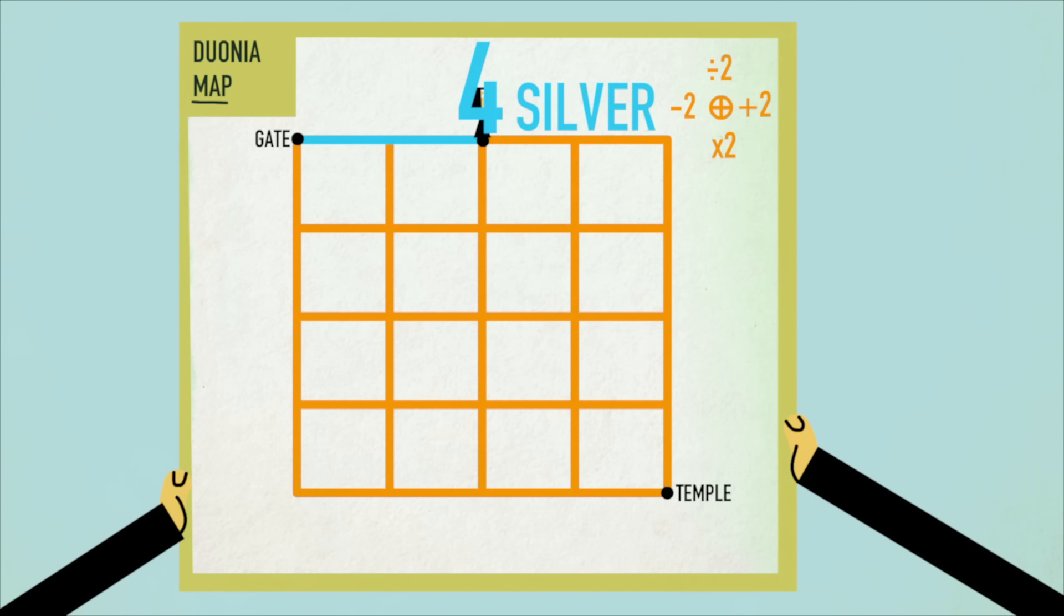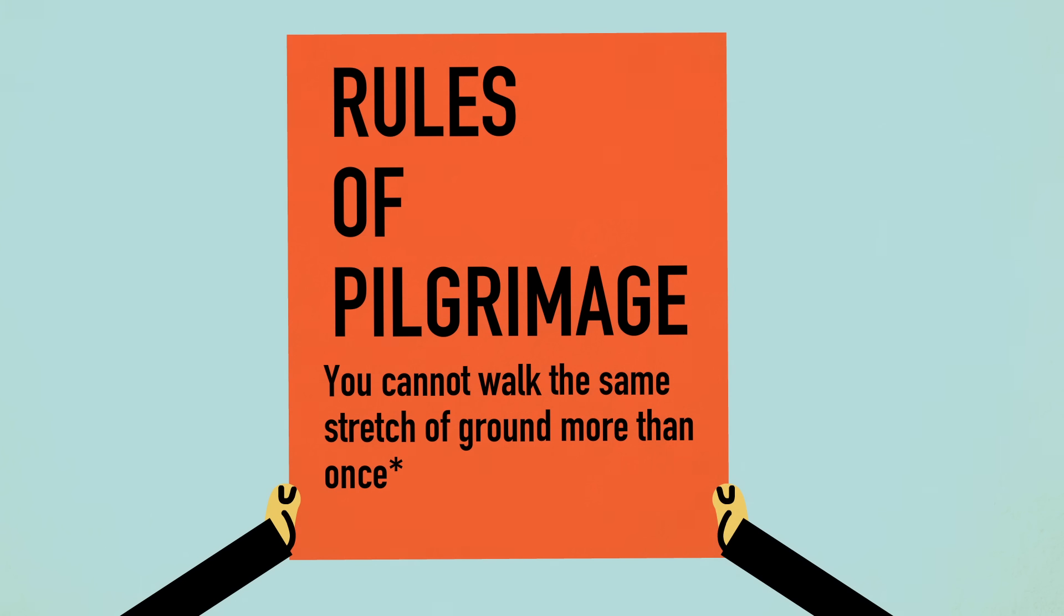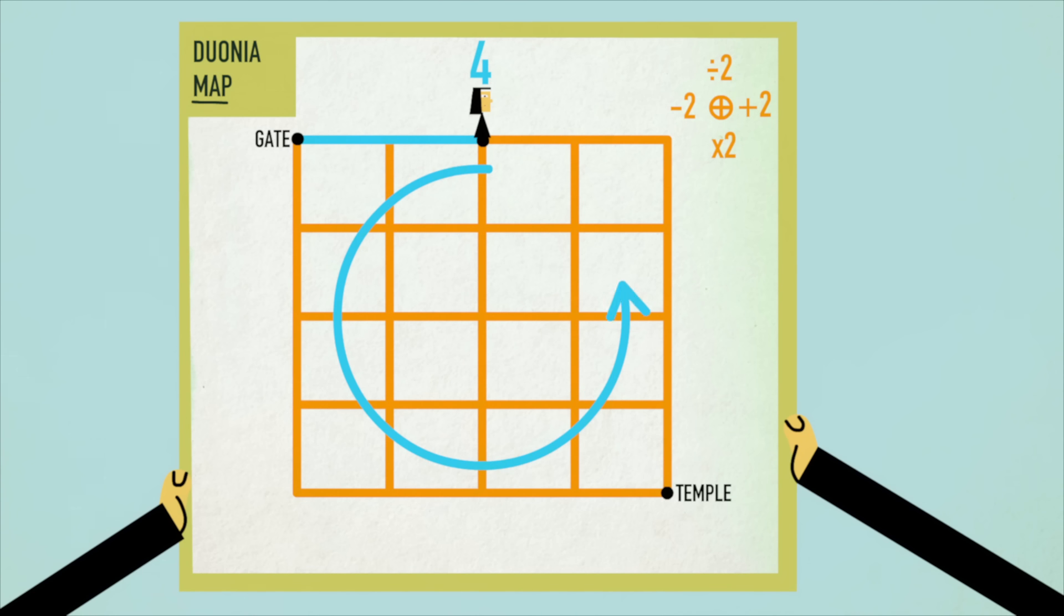You start off owing four silver, so four counterclockwise loops would get you down to zero. Unfortunately, it's not that simple, since you can't walk the same block twice. But there's another way to reduce your bill, walking one large counterclockwise loop through the city.